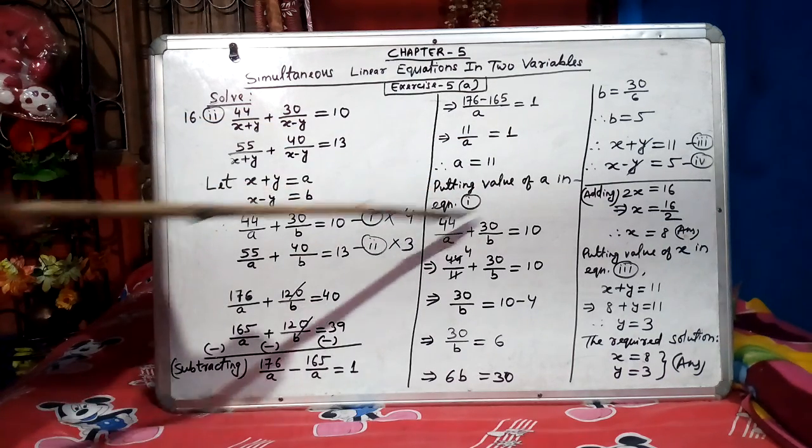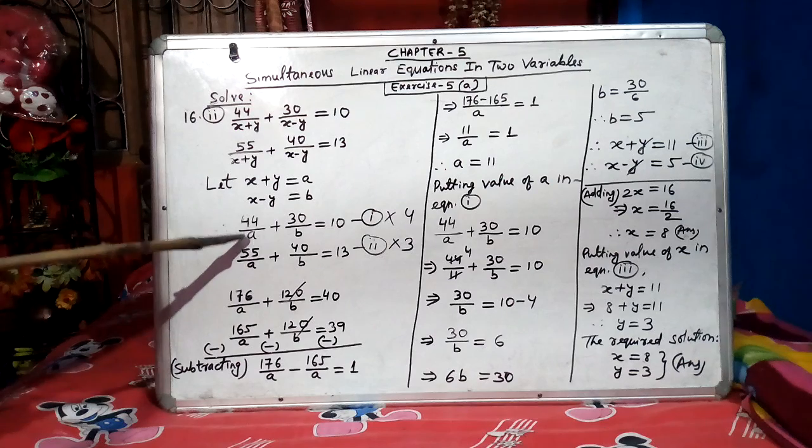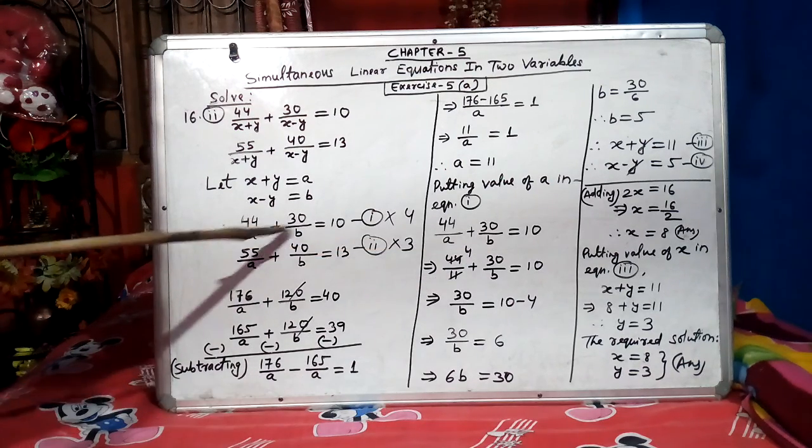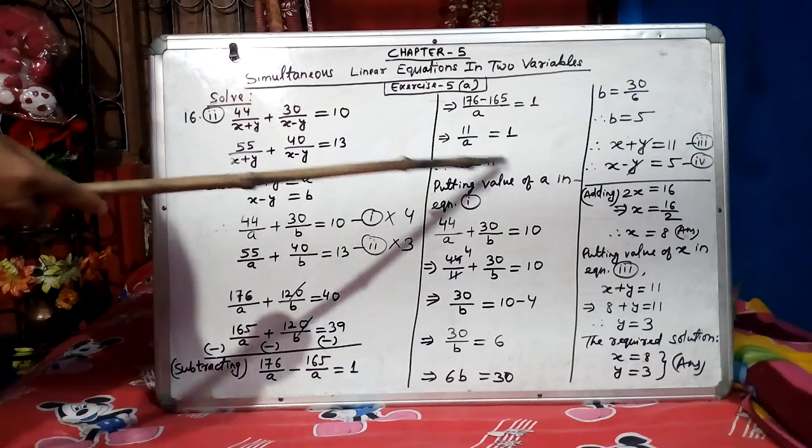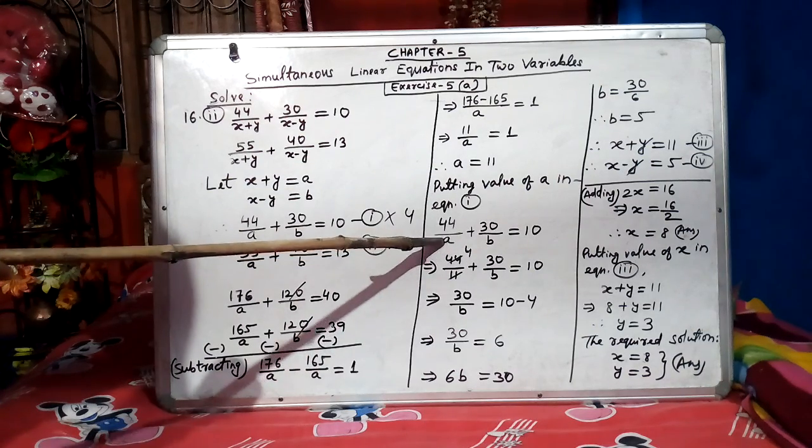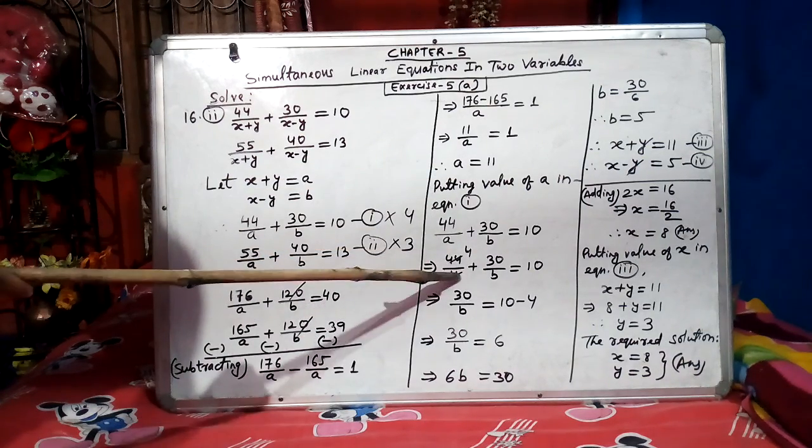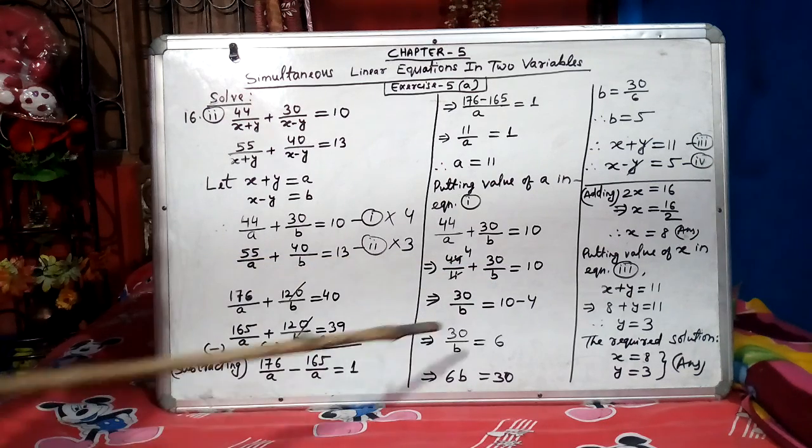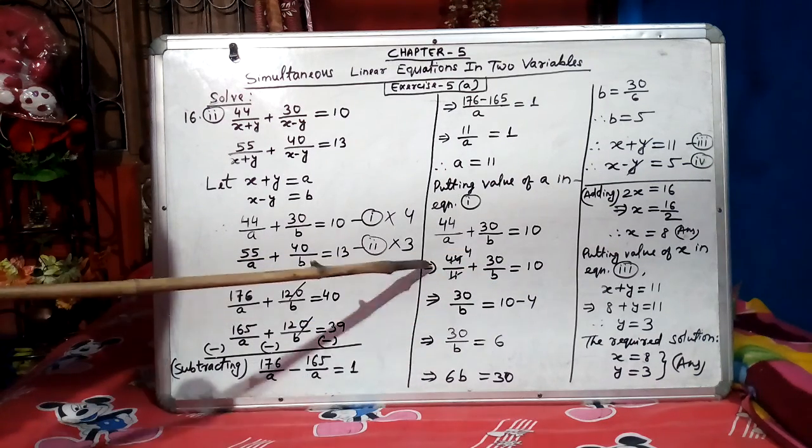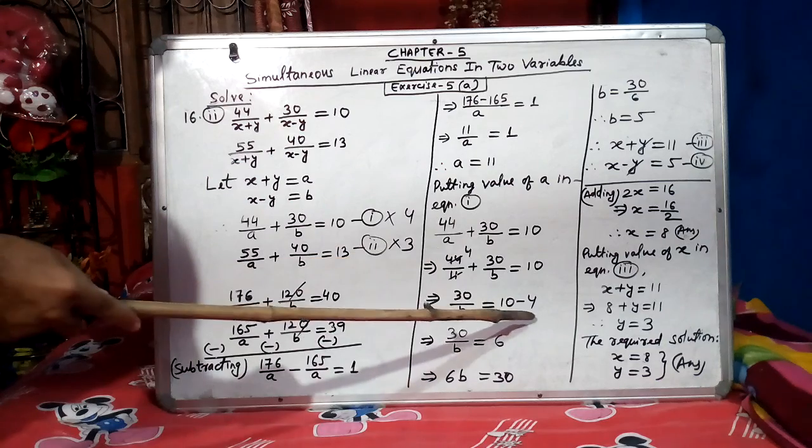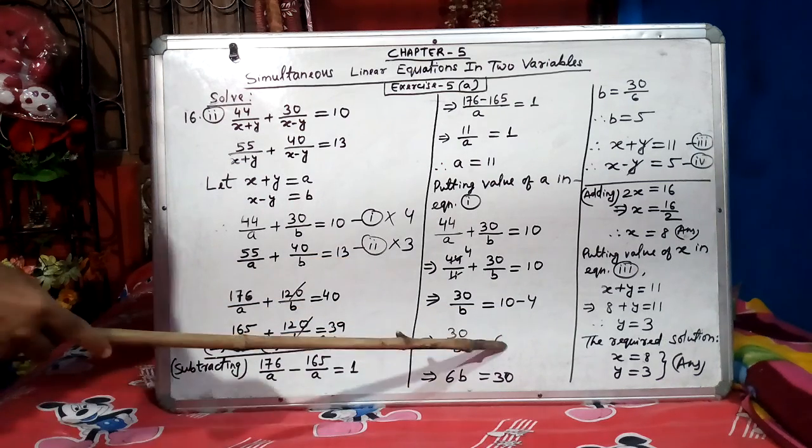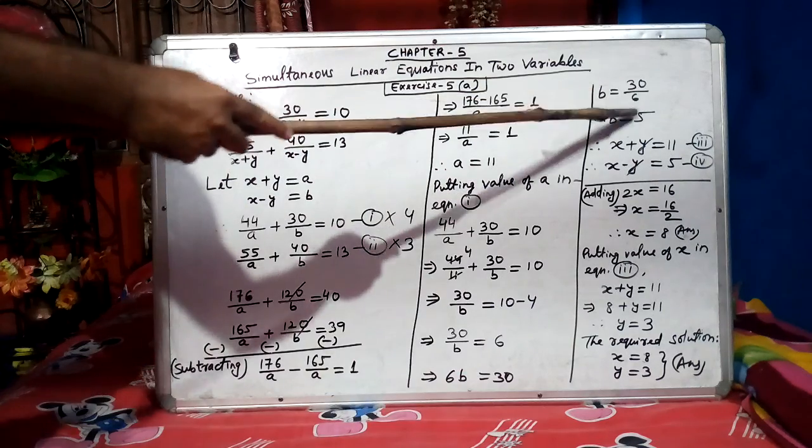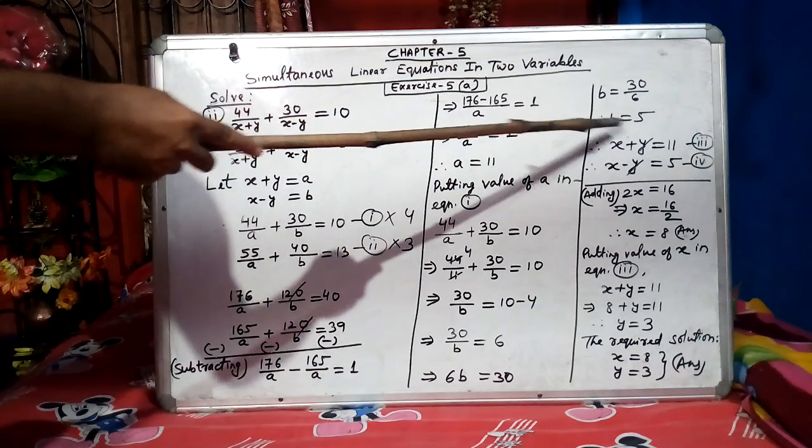Now, putting the value of a in equation 1. Here we can see this is equation 1. So this equation 1, we will rewrite here. Same equation 1 here we wrote from here. And now in place of a, we will put 11. So a has become 11 here because a value is 11. 4 times 11 is 44. 30 by b equal to 10 is same. Now this 4 will shift, it will become minus. Because this is plus, it will become minus. 10 minus 4 is 6. Now 6 into b, 6b. 30 ones are 30. Now b equal to 30 by 6. Therefore, b equal to 5.